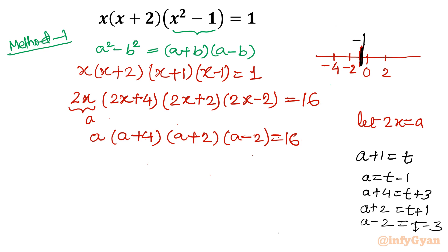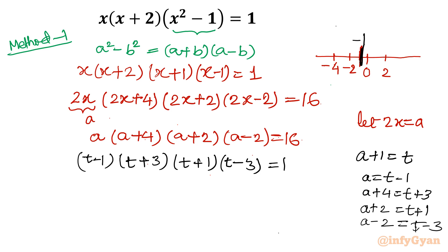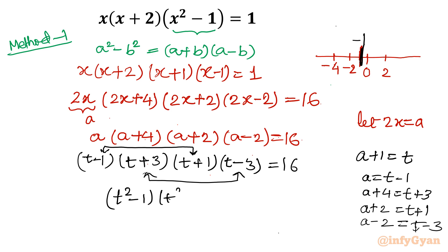Putting in the values, our equation becomes (t minus 1)(t plus 3)(t plus 1)(t minus 3) equal to 16. You can see the (a plus b)(a minus b) form. We club these two pairs together: (t minus 1)(t plus 1) gives t squared minus 1, and (t plus 3)(t minus 3) gives t squared minus 9, equal to 16.